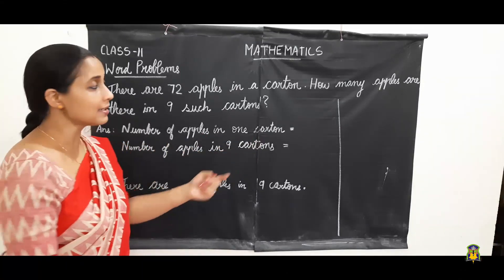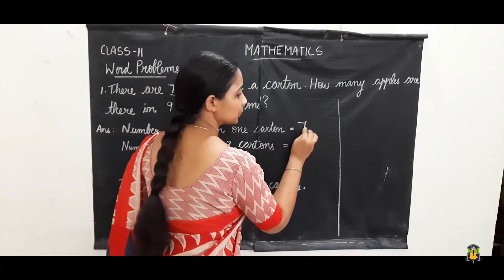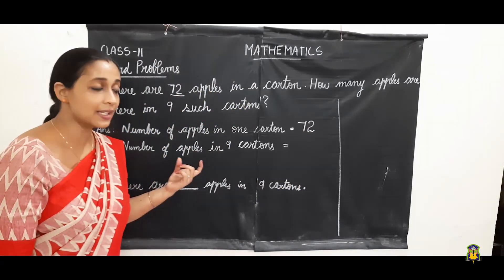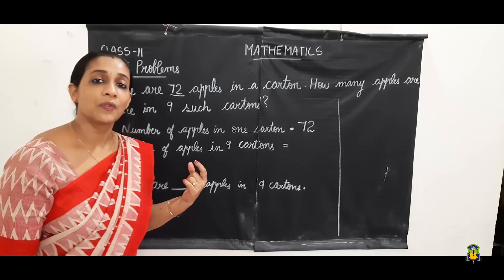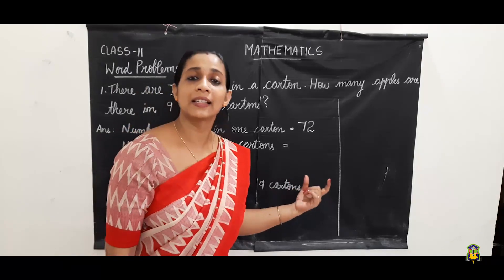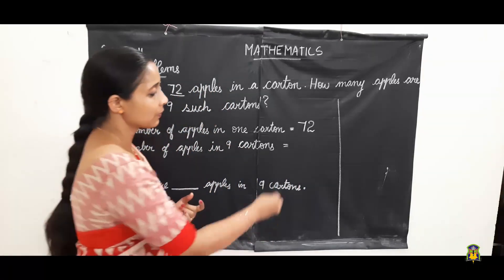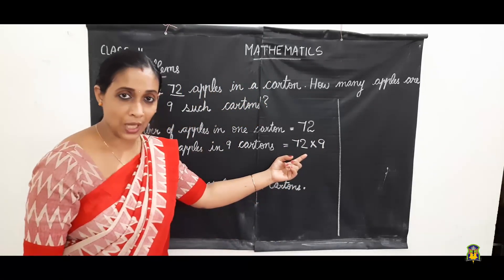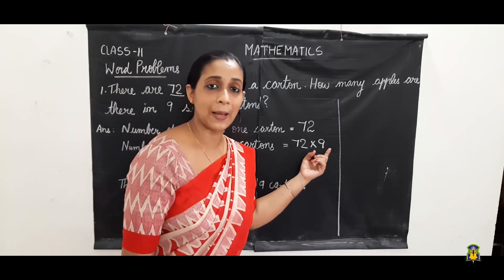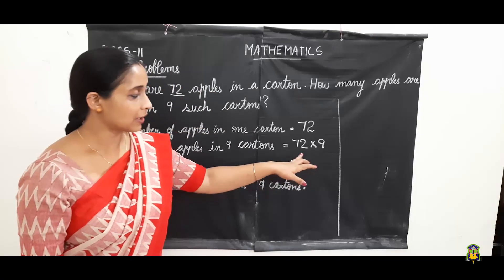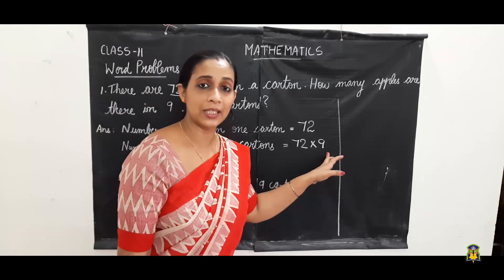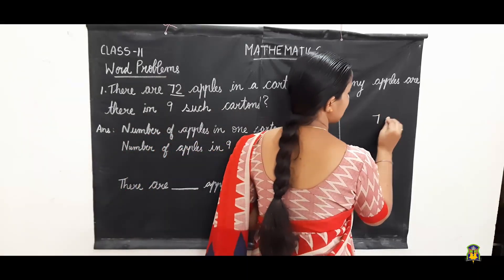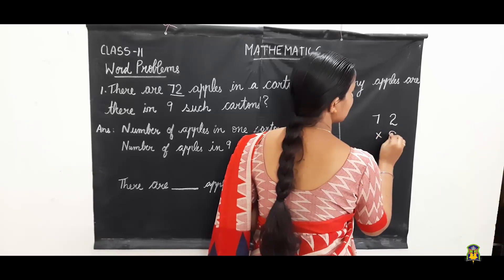Number of apples in one carton is 72. We have to find out the number of apples in nine cartons. We have to multiply — it is nothing but repeated addition of numbers. So 72 into nine. There are 72 apples and we have to find out how many apples are there in nine cartons. So let us do 72 multiplied by nine.